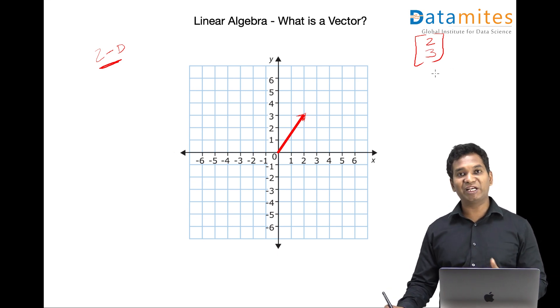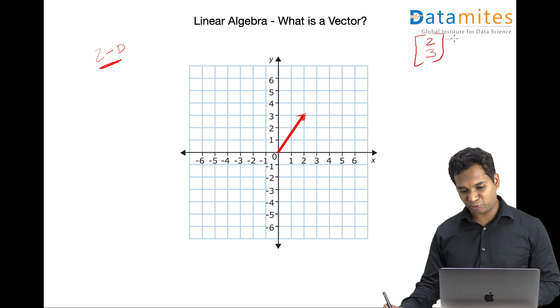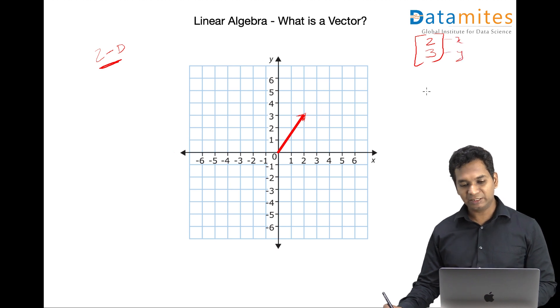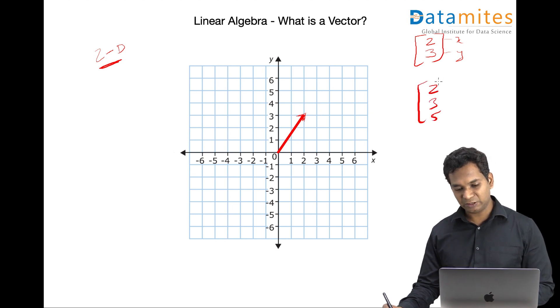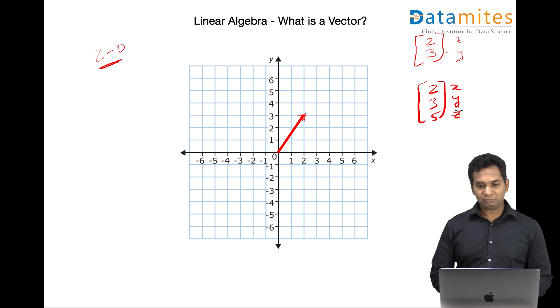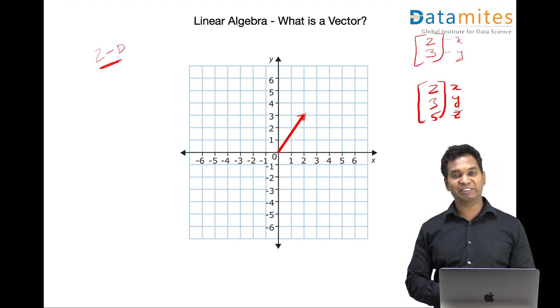And if you want to represent a three dimensional vector, so basically this two is corresponding to x and this is corresponding to y. If you are looking at a three dimensional vector, so the same concept, you'll be saying let's say two, three and let's say five, which represents corresponding axes, units in corresponding axes. So that's a convention. That's a simple vector.